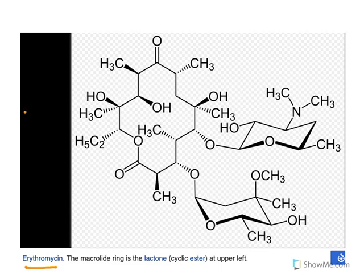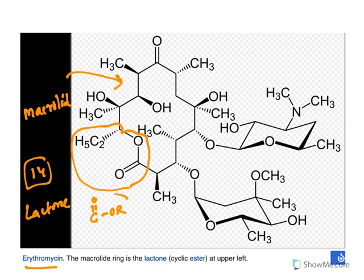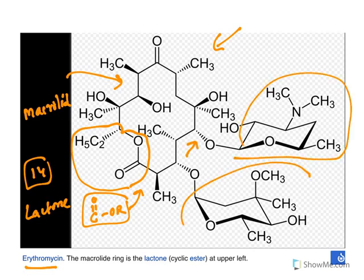The reason why they have got the name macrolide is because of this big ring. This ring is made up of 14 atoms, and this 14-atom ring has got this particular functional group which is known as a lactone. Lactone means cyclic esters - C-O-O-R is ester, when it is cyclic it is called lactone. Along with this lactone ring, it is glycosidically linked to an amino sugar and a neutral sugar.